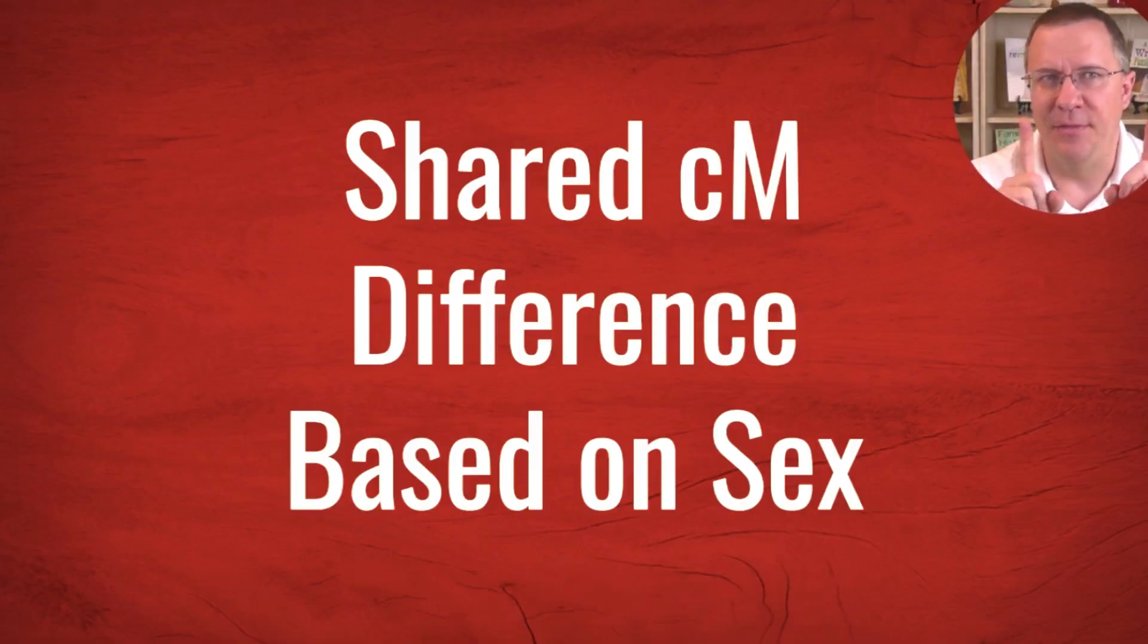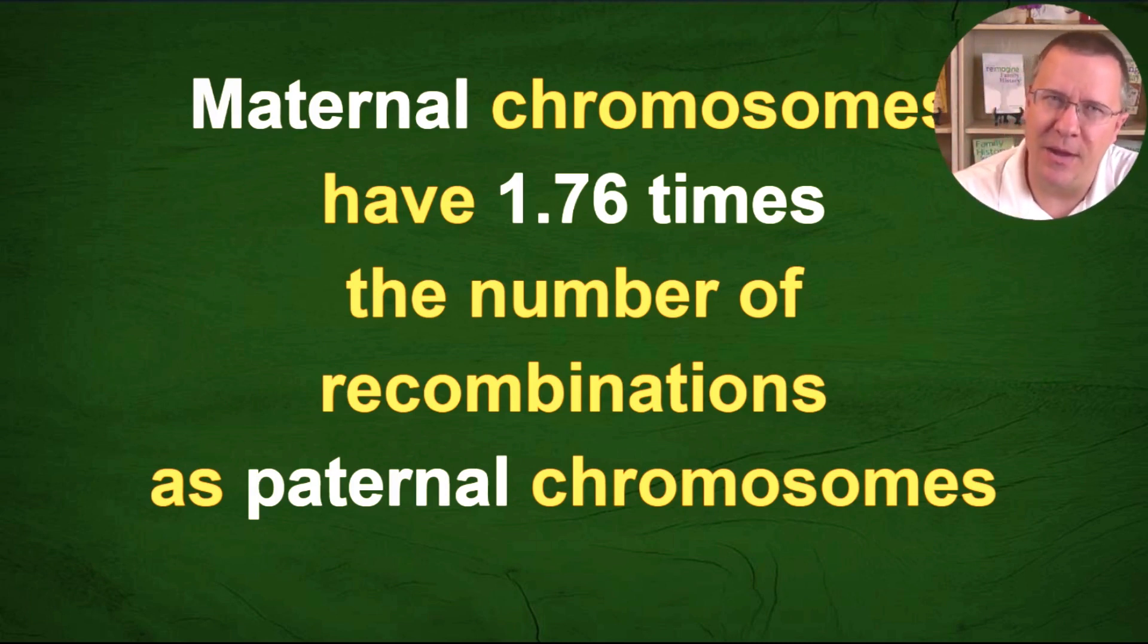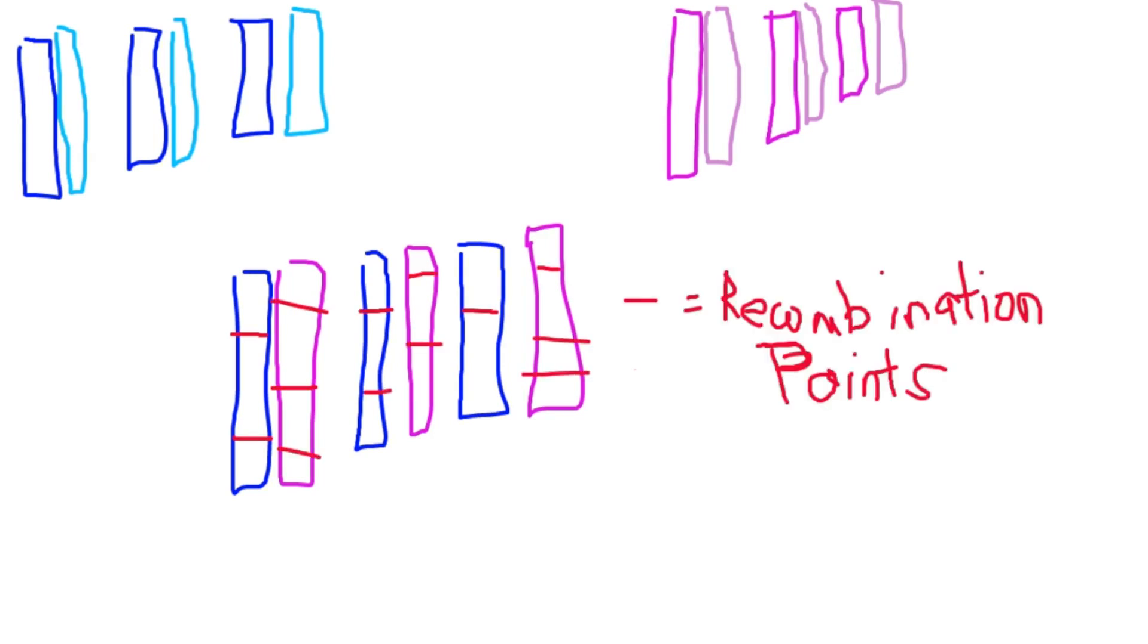They wanted to know whether or not that sex difference mattered as far as matches. We know that maternal chromosomes have 1.76 times the number of recombinations as paternal chromosomes. For instance, you get a set of chromosomes from your father and a set from your mother. The set you get from your father have less recombinations, on average, than the set you get from your mother. In other words, your mother's chromosomes are divided up into more segments of each of her parents than your father's chromosomes are divided up of his parents.